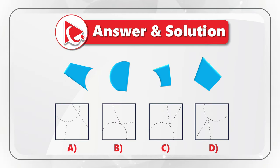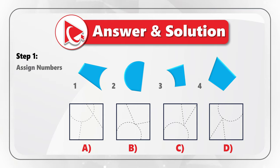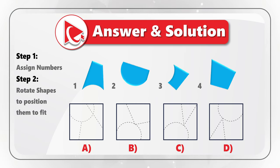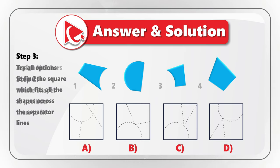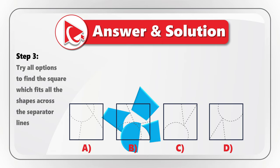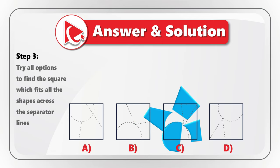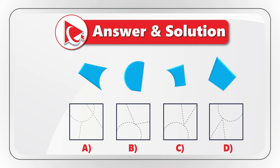I was able to solve this challenge in three simple steps. In step one, you need to assign numbers to the shapes. In step two, you need to rotate the shapes to position them to fit. And in step three, you need to try all the options to find the square which fits all the shapes across the separator lines.